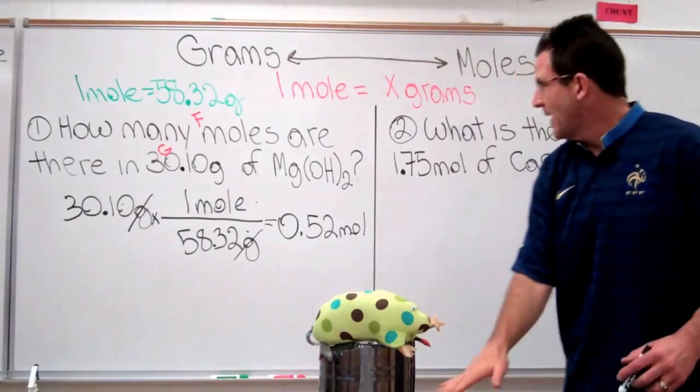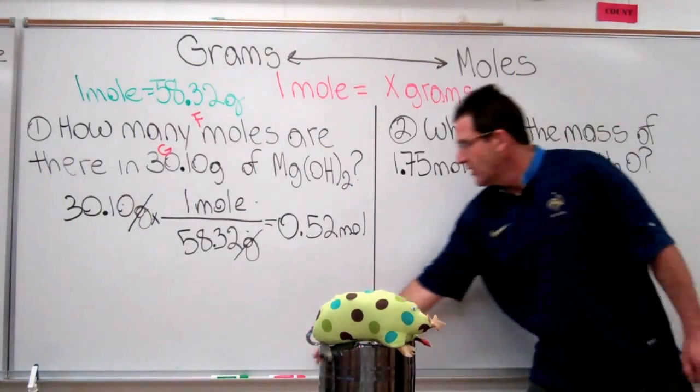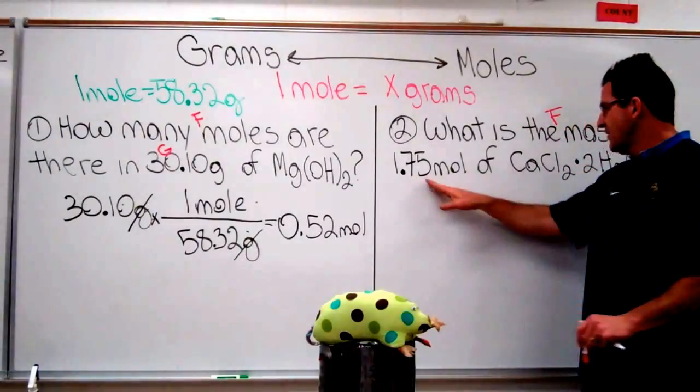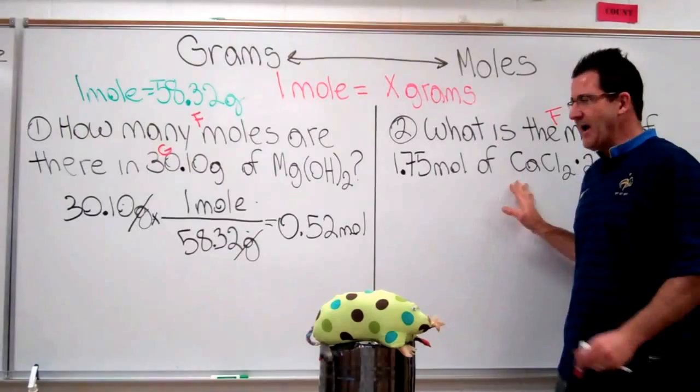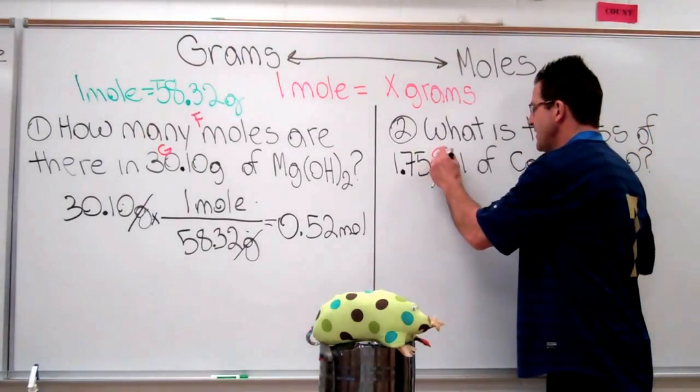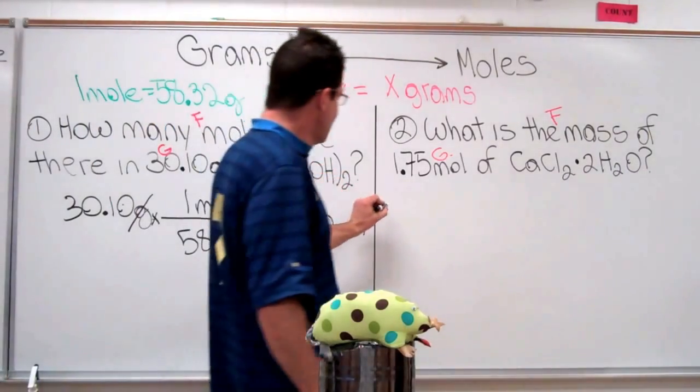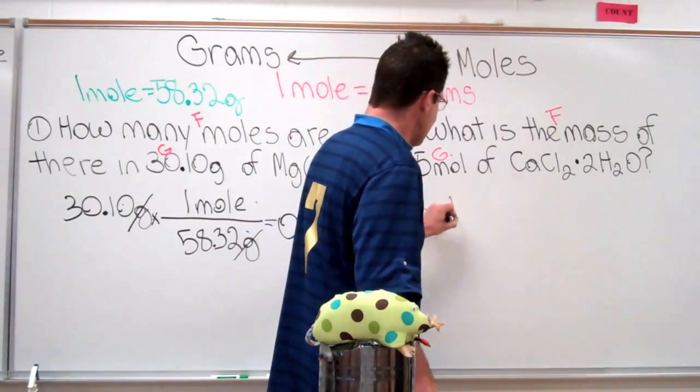Now, let's do one where we convert back the other direction. Now, this time we want to know what is the mass. So, what is the mass? It's what we're trying to find. We put a little F there for what we're trying to find. We've been given some number of moles of calcium chloride dihydrate. So I'm going to put down the given like that. Alright? Now, once again, I don't think about it too much. I just write down what I've been given.